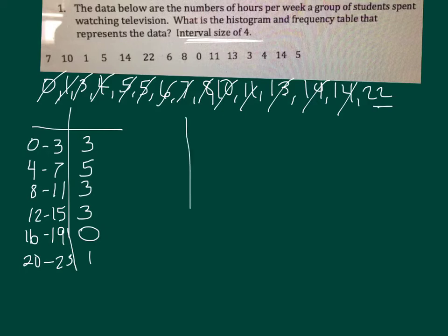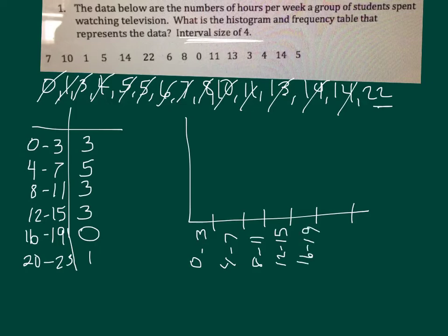Now we've got to make a histogram. So you make an L graph. We have 1, 2, 3, 4, 5, 6 intervals. So your first one is from 0 to 3, 4 to 7, 8 to 11, 12 to 15, 16 to 19, 20 to 23.